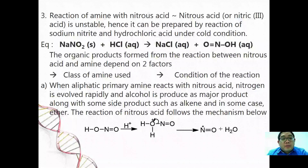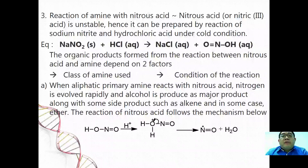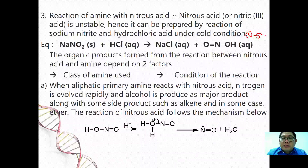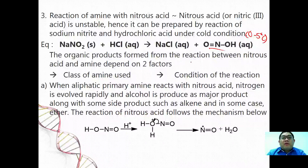The last reaction is the reaction of amine with nitrous acid. Nitrous acid is actually unstable at room temperature, so you have to prepare it freshly by using sodium nitrite and hydrochloric acid under cold conditions — around 0 to 5 degrees Celsius. The overall equation for the reaction of NaNO2 in HCl gives NaCl plus HNO2. The organic product formed depends on two factors: first, the class of amine used, and second, the conditions for the reaction.